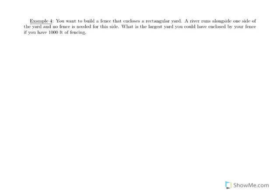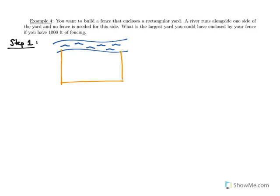Next example: we want to build a fence enclosing a rectangular yard. A river runs alongside one side of the yard and no fence is needed for that side. What is the largest yard you could enclose if you have 1,000 feet of fencing? Step 1: draw a picture. We have a river, and we'll build fence on three sides to create a rectangular yard.